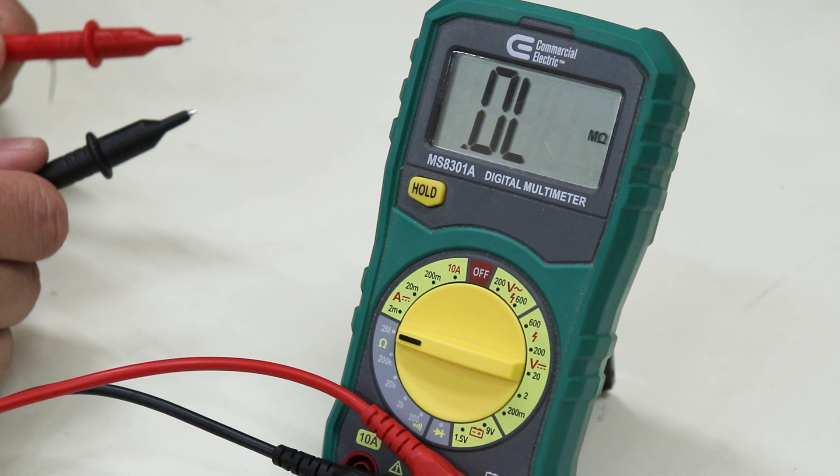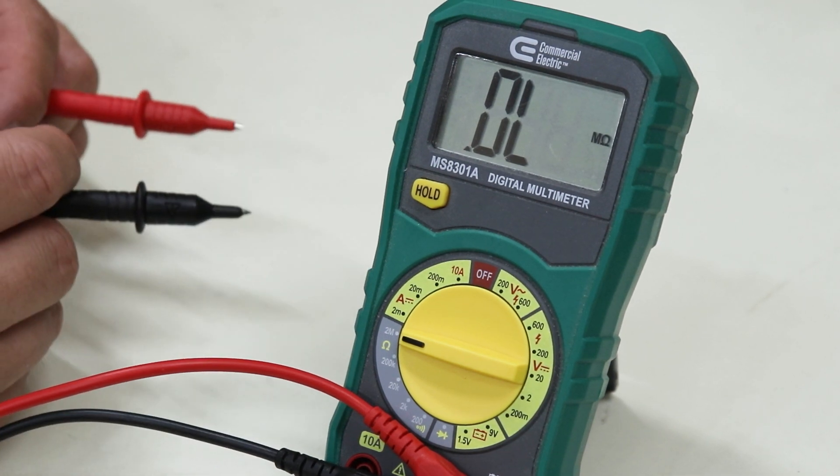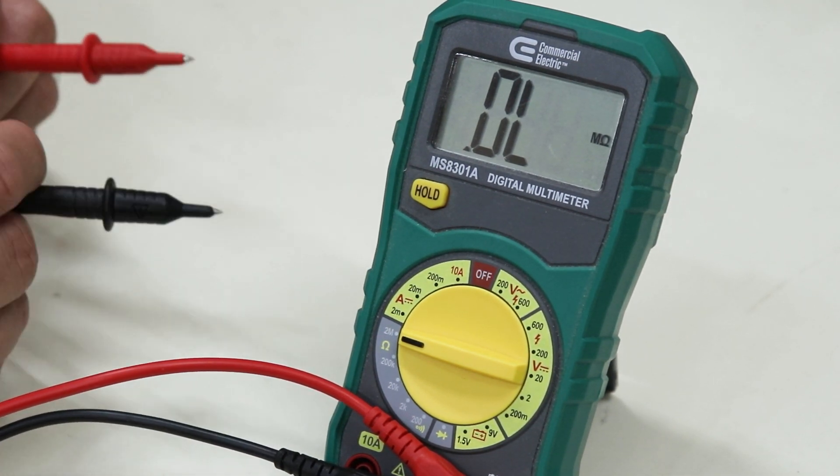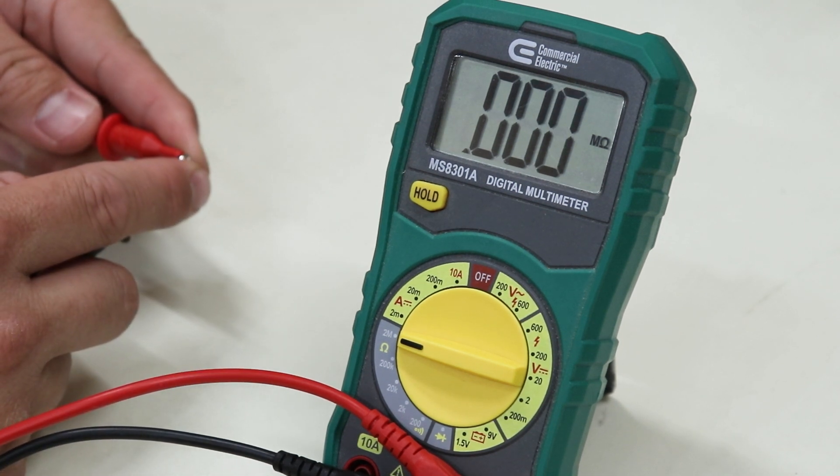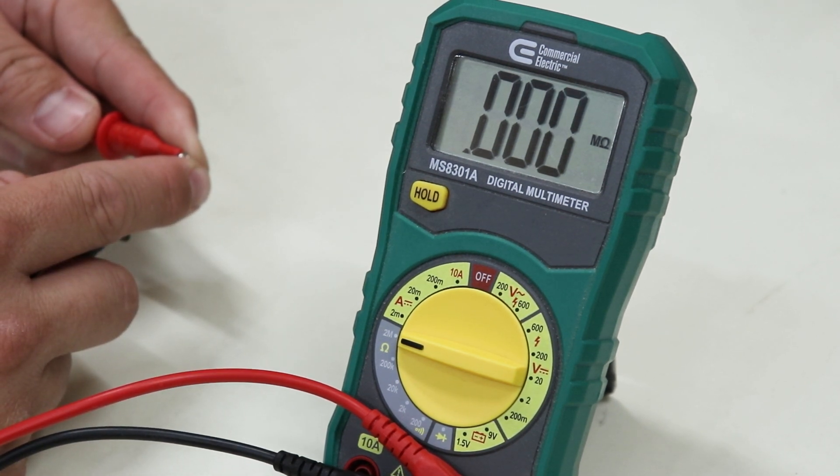So you'll notice that when the probes are not touching anything, the display reads OL, which stands for Open Loop. Another way to say this is that there's infinite resistance between these two probes. When I touch the two probes together, you'll notice that the resistance drops down to zero, which means there is no resistance between the two probes.